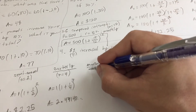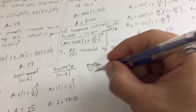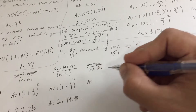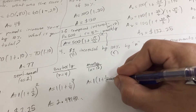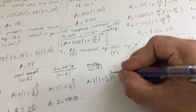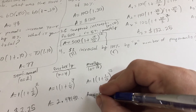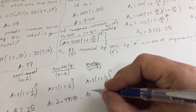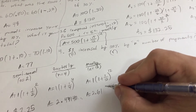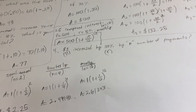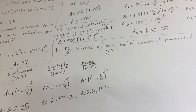Monthly compounding — like we saw in problem 3.5 — means n equals 12. We calculate 1 times (1 + 1.00/12) to the power of 12. This brings our new amount to approximately $2.6130. As you can see, the more times we compound, the amount keeps increasing.